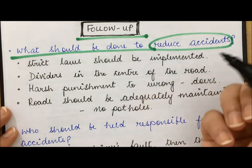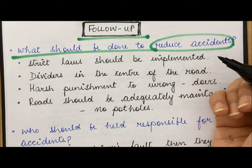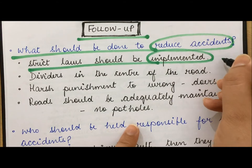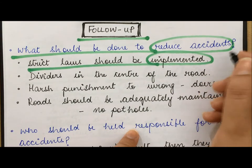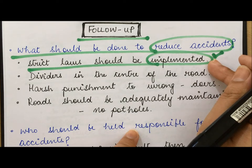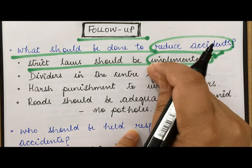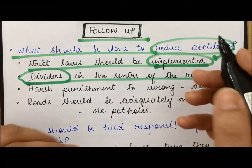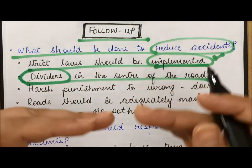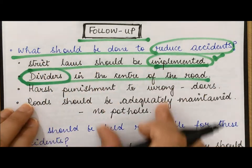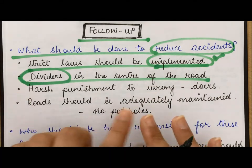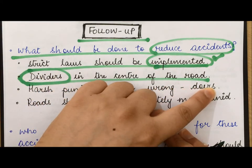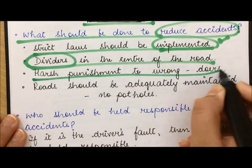The first follow-up question is: what should be done to reduce accidents — what are the preventive measures? You can say: strict laws should be implemented. We say 'implemented' rather than 'made' because the laws already exist but are not being enforced properly. Also, dividers in the center of the road would help — if there had been a divider in our accident scenario, the collision might not have happened.